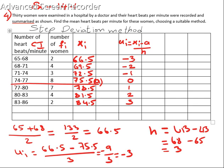If I consider 75.5 as the assumed mean, here I will get 0 corresponding to the assumed mean. Upwards from the assumed mean I will get minus 1, minus 2, minus 3, and downwards I will get 1, 2, and 3 positive.